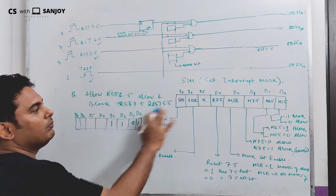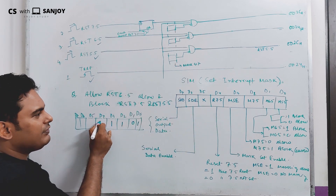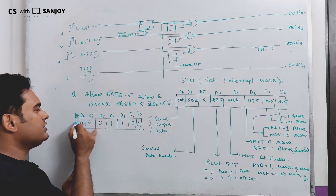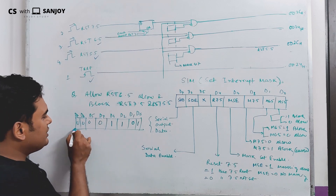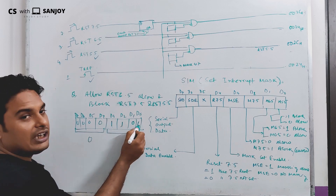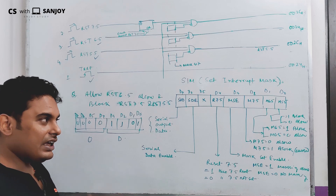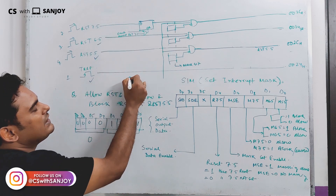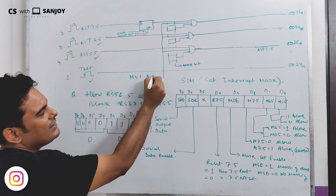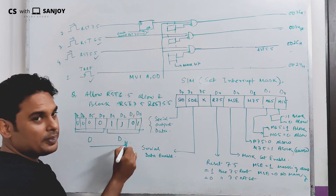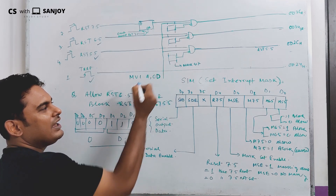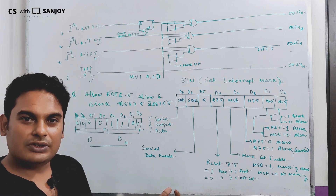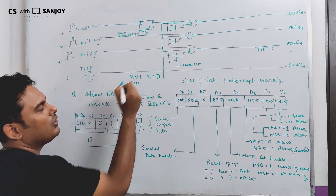We have to block 7.5 and reset accordingly. The SOD and reset bits are immaterial here, so we put 0. Looking at this, the hex value is 0D. So the 8085 instruction is: MVI A, 0D — this loads 0D into the accumulator as an immediate value, setting up the mask.